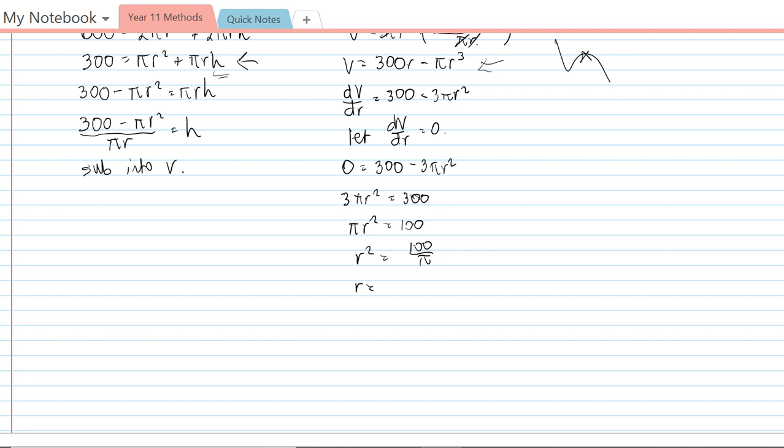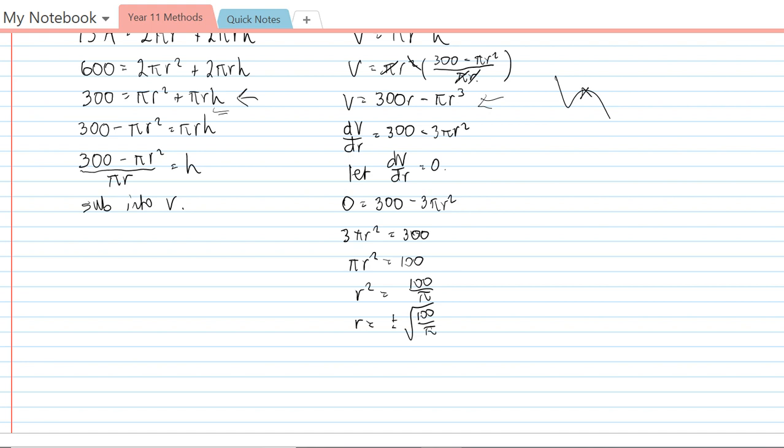remember when you're doing it like this, when you take the square root, you have to have a plus or minus square root of 100/π. Now that's not a particularly nice answer. Again, the point on the left here is going to have the smaller value of r, so that's the negative root 100 on π.